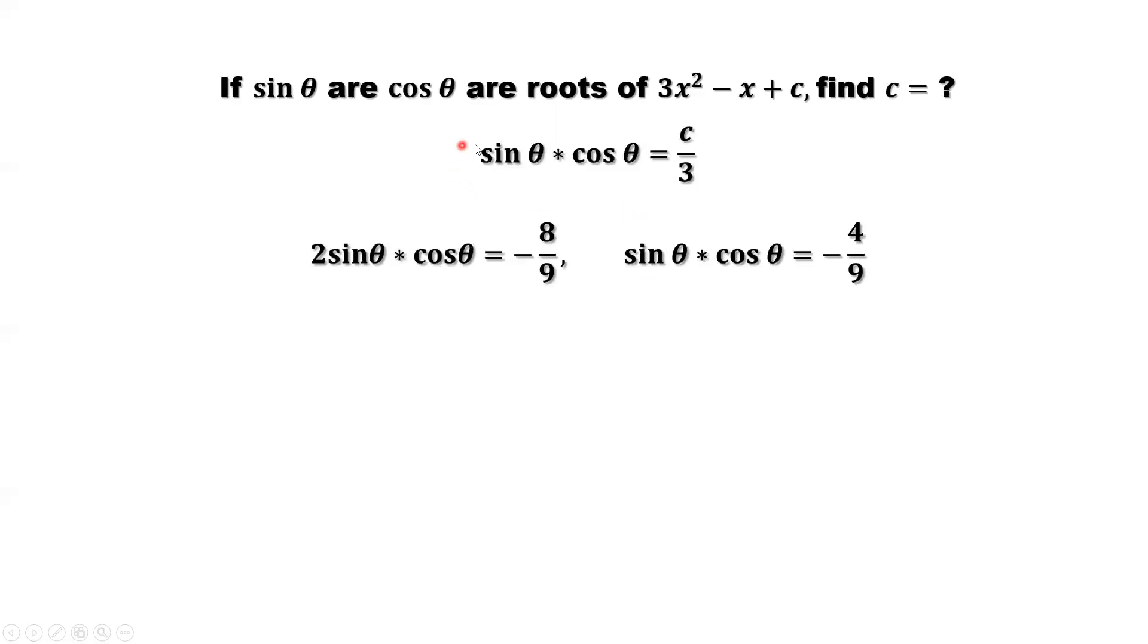Now, we have two results. Sine theta times cosine theta equals c over 3. That is the result from the product of two solutions equals c over a. A is 3. We have this new result. That means c over 3 equals negative 4 over 9. Combining both results, we have this here.